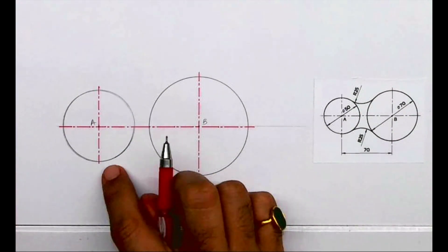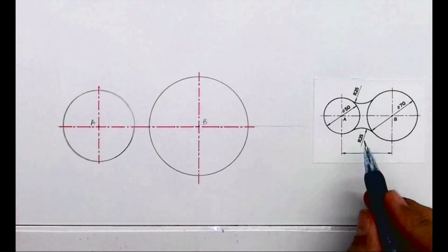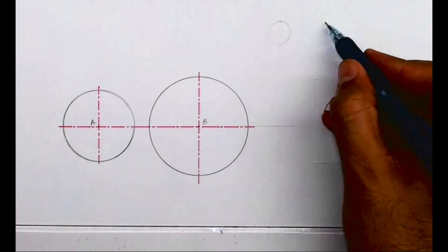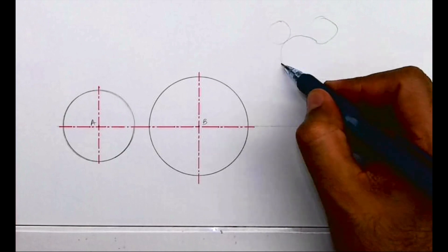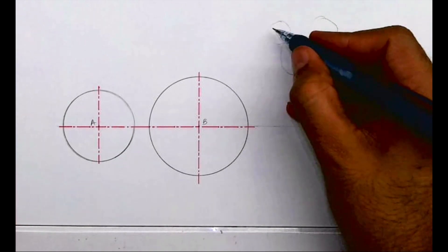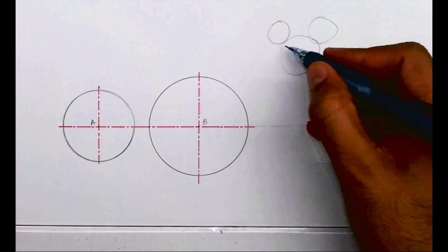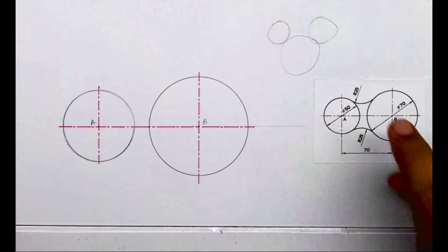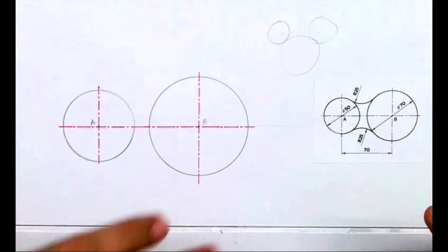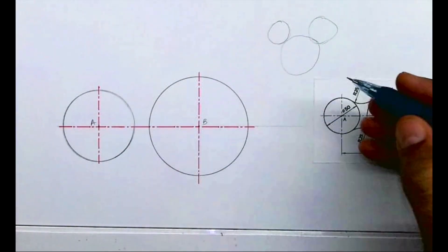Now we need to draw radius 25, which is external. What do you mean by external? Let's say if you have two circles and a third circle is touching both from outside, it will look like Mickey Mouse. If I remove the lower part, it looks like our answer.